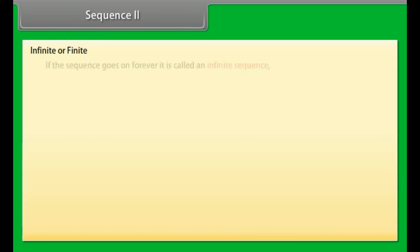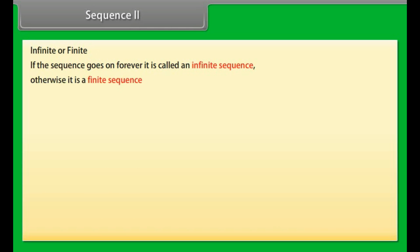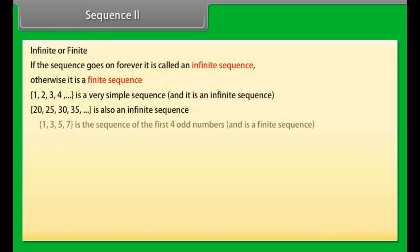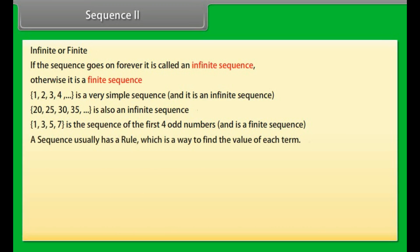If the sequence goes on forever it is called an infinite sequence. Otherwise, it is a finite sequence. 1, 2, 3, 4, and so on is a very simple sequence and it is an infinite sequence. 20, 25, 30, 35, and so on is also an infinite sequence. 1, 3, 5, 7 is the sequence of the first four odd numbers and is a finite sequence.